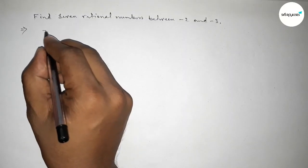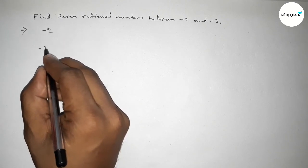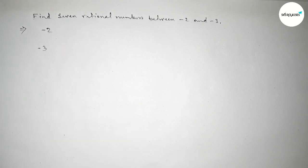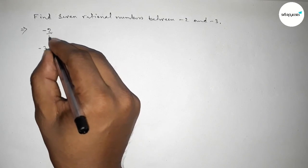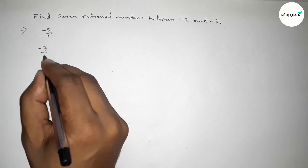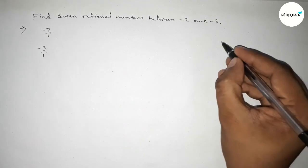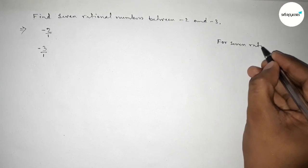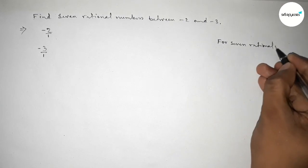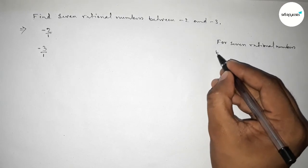First of all, write down the given numbers: minus 2 and minus 3. We can write minus 2 as minus 2 over 1 and minus 3 as minus 3 over 1.